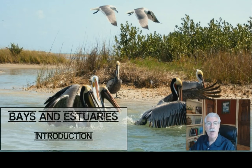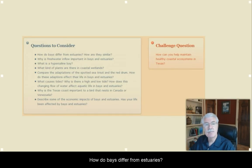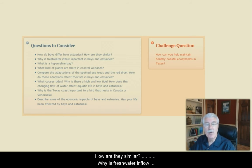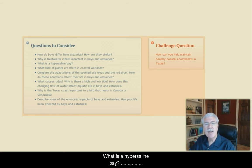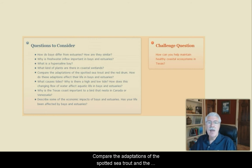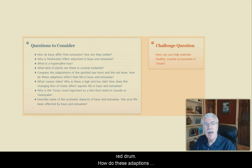Today's lesson is on bays and estuaries. To help focus today's lesson, here are a few questions to consider. How do bays differ from estuaries? How are they similar? Why is freshwater inflow important in bays and estuaries? What is a hypersaline bay? What kind of plants are there in coastal wetlands? Compare the adaptations of the spotted sea trout and the red drum. How do these adaptations affect their life in bays and estuaries?